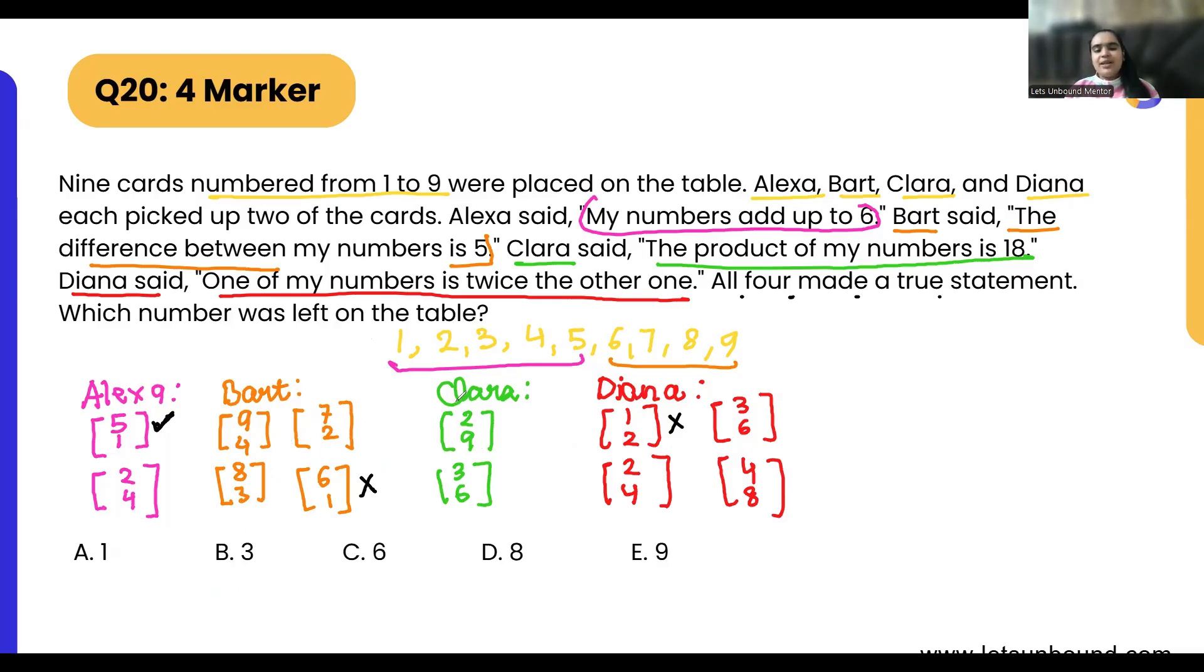So let's assume that Clara is having two and nine. That means from all the other options we need to cross out two and nine. You can forget about Alexa's two and four because we have already assumed that Alexa is having five and one. So Clara we are assuming has two and nine. That means two is here so we will eliminate this option. Nine, this as well. Two is here, this as well.